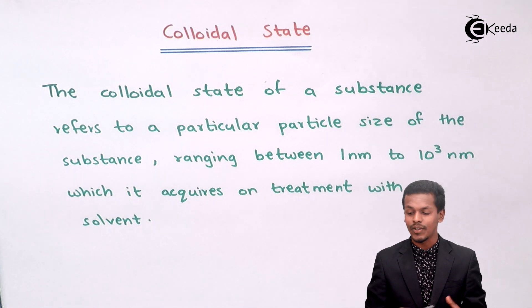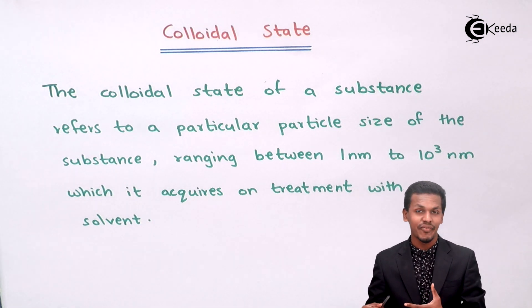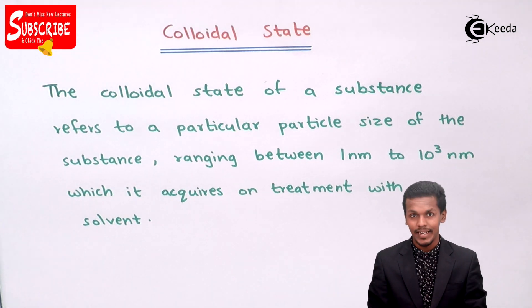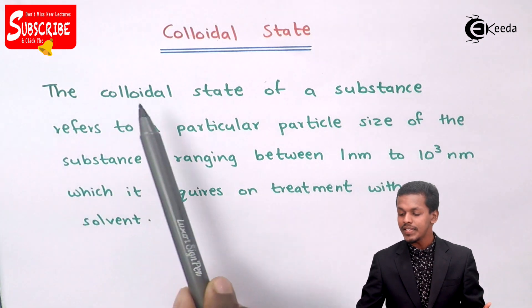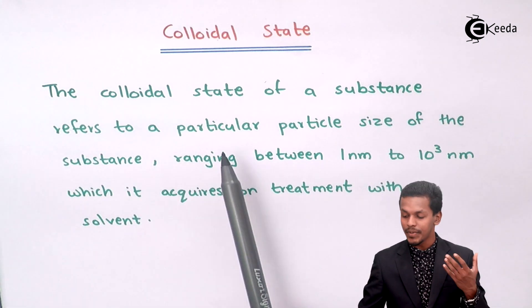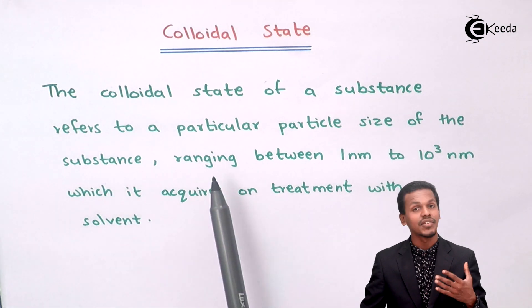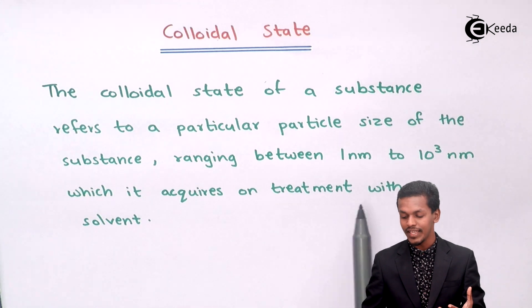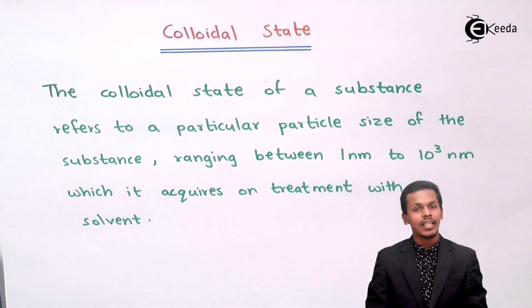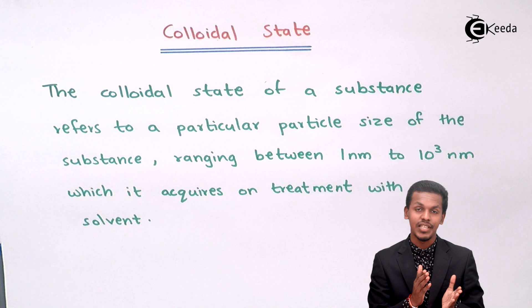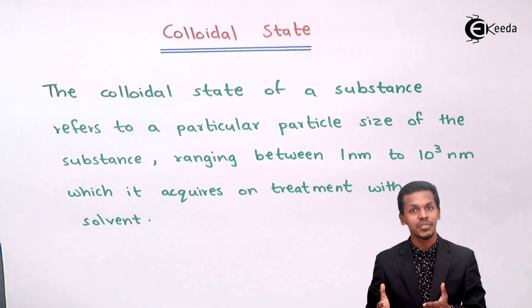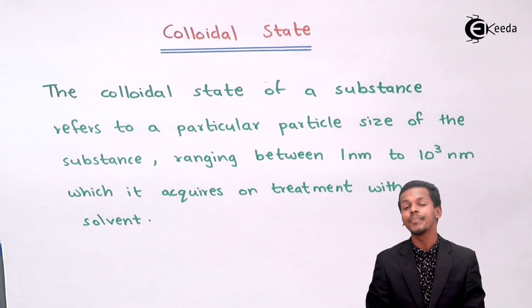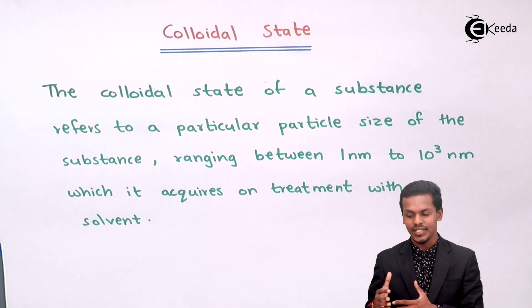The Colloidal State of a substance refers to a particular particle size ranging between 1nm to 10³nm, which it acquires upon treatment with a solvent. There are three kinds of solutions: true solution, colloidal solution, and suspension. In this chapter we will talk about all three, but we will start with the Colloidal State first.